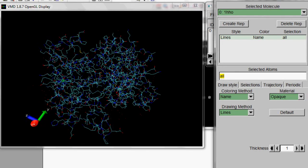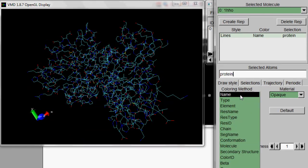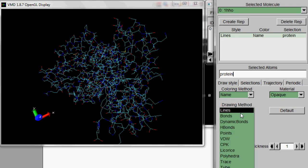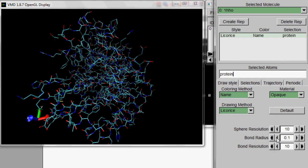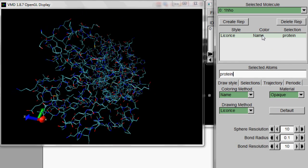Delete the All and type in Protein, then hit Return. There you go. That's just the amino acids of the hemoglobin protein. Now let's find that magical heme group that gives it the excellent ability to carry oxygen.